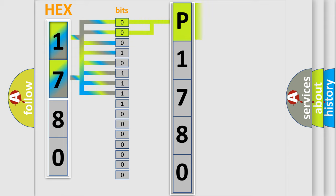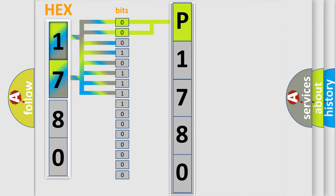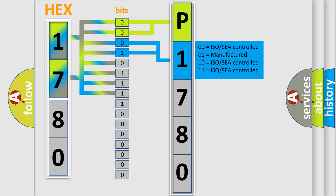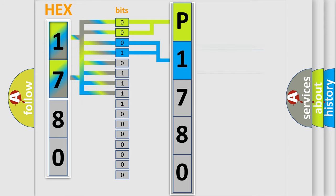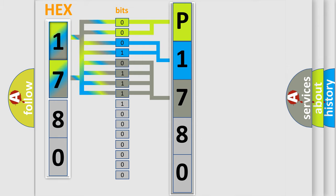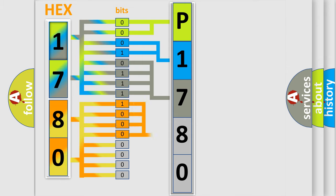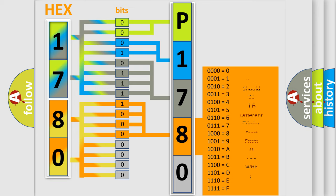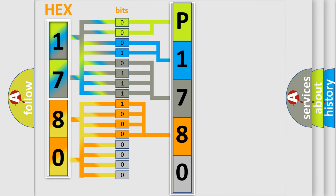By combining the first two bits, the basic character of the error code is expressed. The next two bits determine the second character. The last bits of the first byte define the third character of the code. The second byte is composed of a combination of eight bits. The first four bits determine the fourth character, and the combination of the last four bits defines the fifth character. A single byte conceals 256 possible combinations.